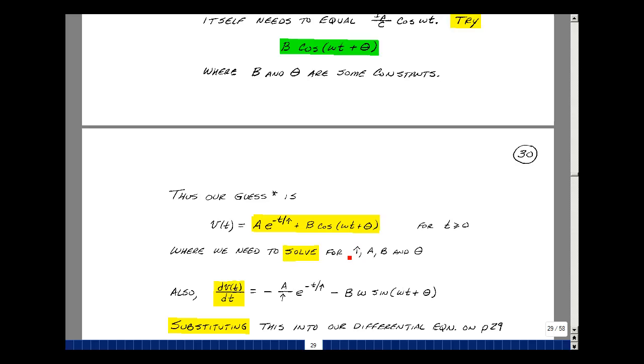Now we actually know the value of tau. It's R Thevenin times C. So I'm going to need three equations to solve for the remaining three unknowns.